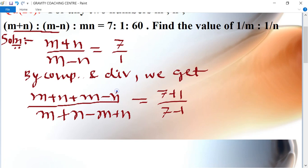So the n and n cancel and m m cancel. This implies that 2m upon 2n equal to 8 upon 6, so 4 upon 3.